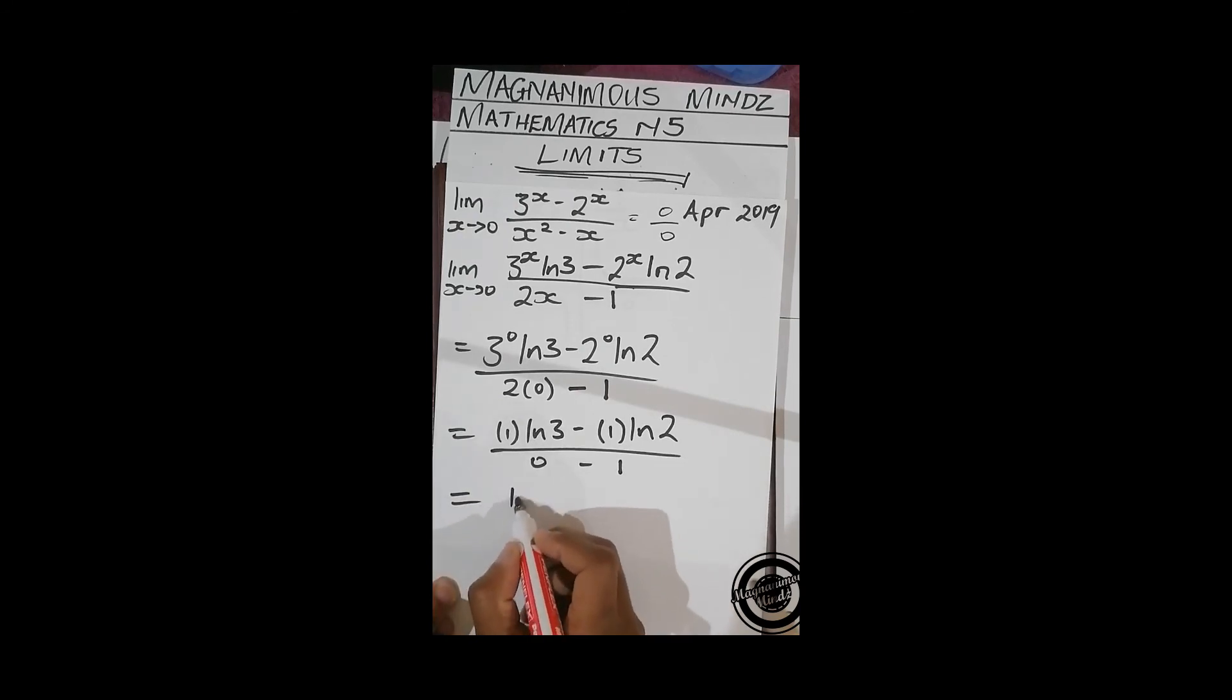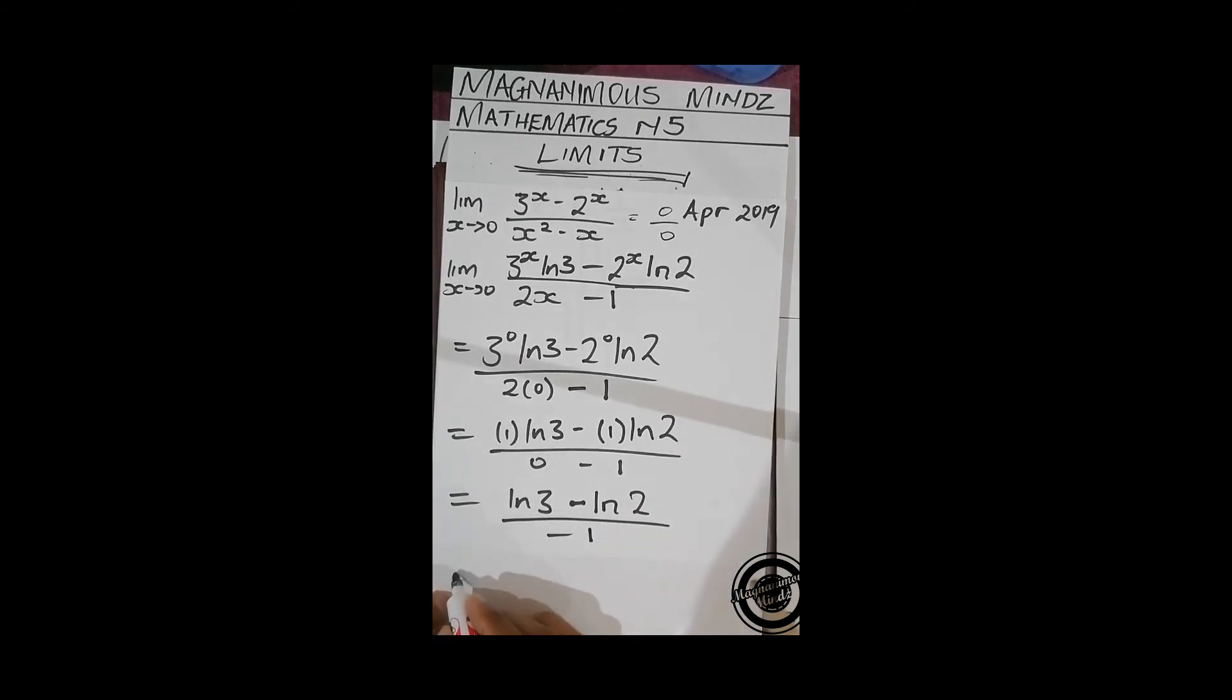This is ln(3) minus ln(2) all over negative 1. This will become ln(2) minus ln(3). And that's it for this equation.